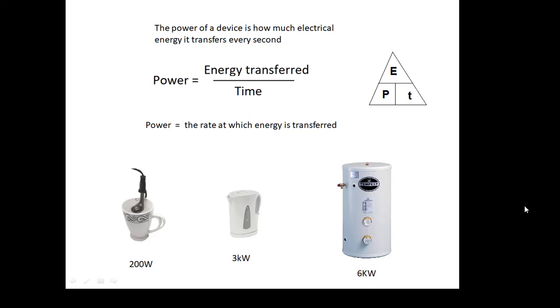Power is the rate at which energy is transferred—how much energy is transferred per second. At the bottom here, we've got three electrical heaters. If you look at the power of each one: the little one that you might take camping with you, 200 watts; the kettle in your kitchen, 3 kilowatts (3,000 watts);